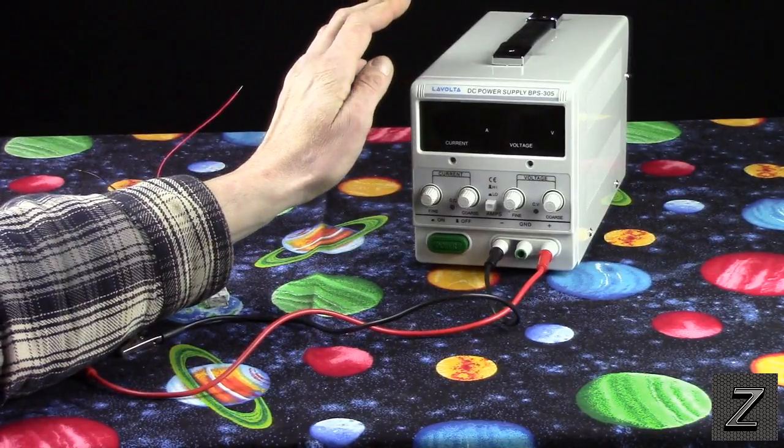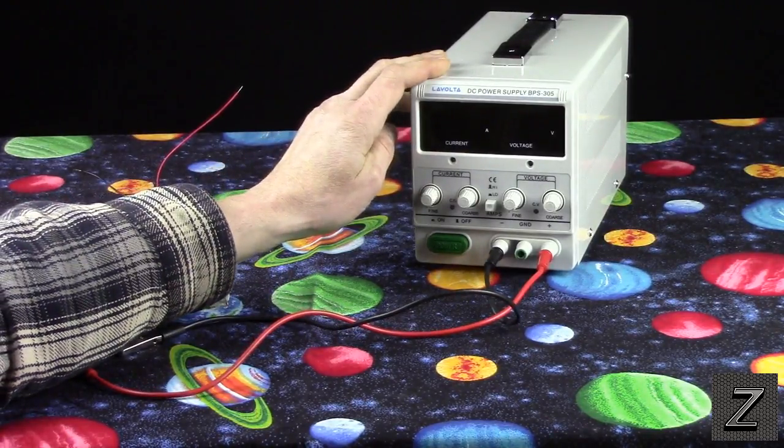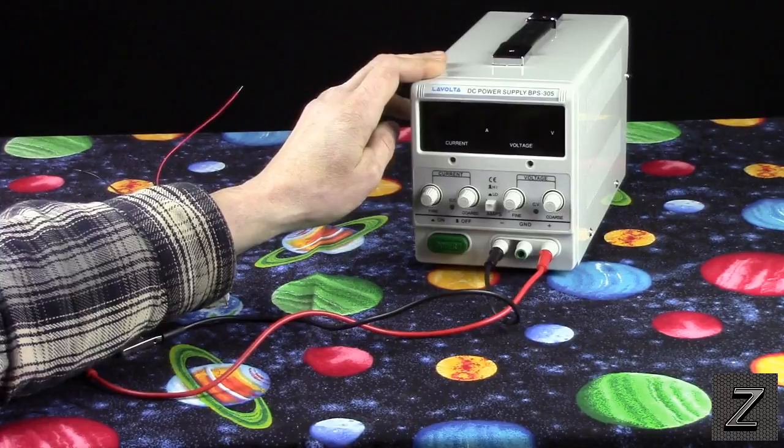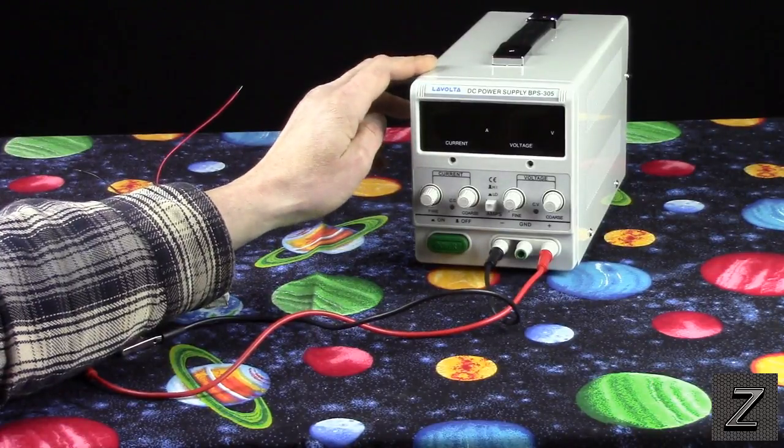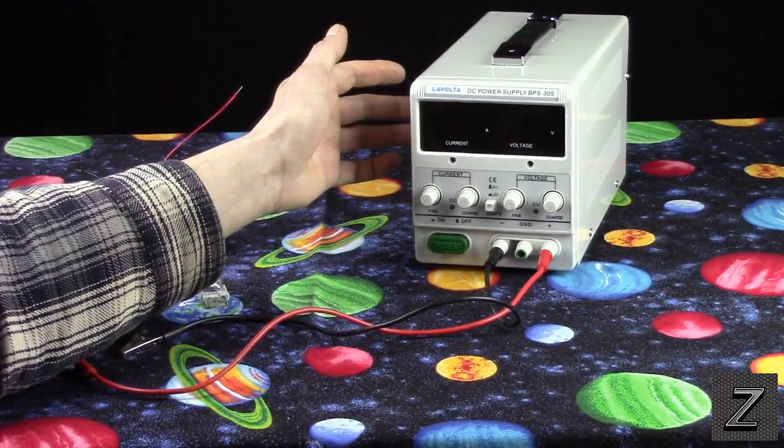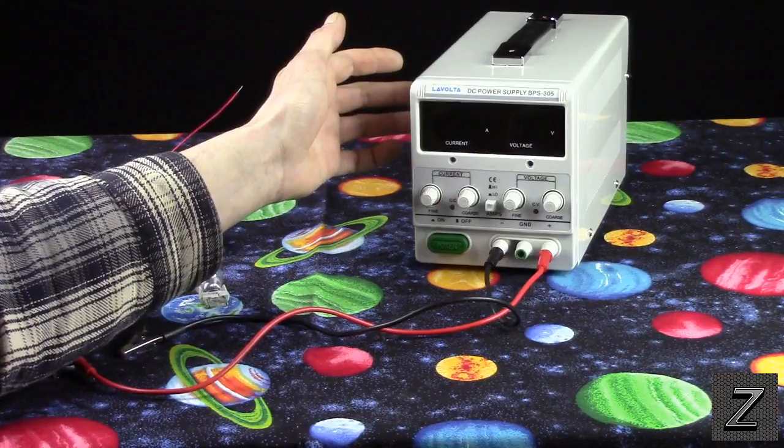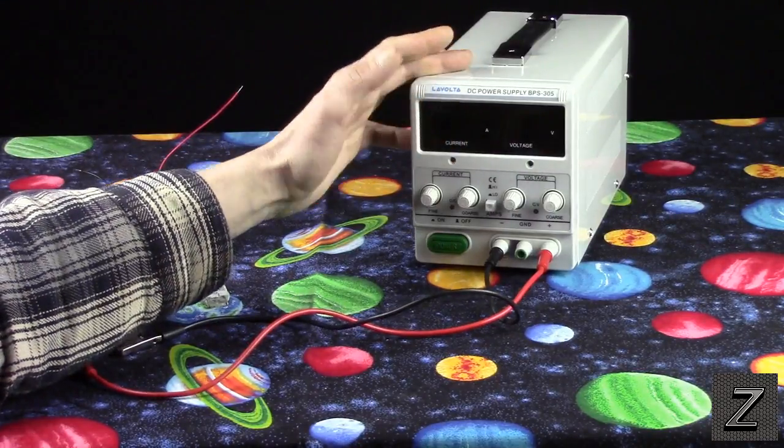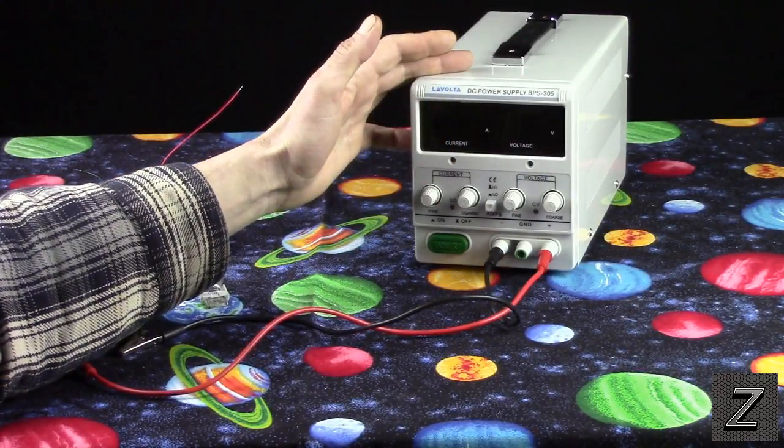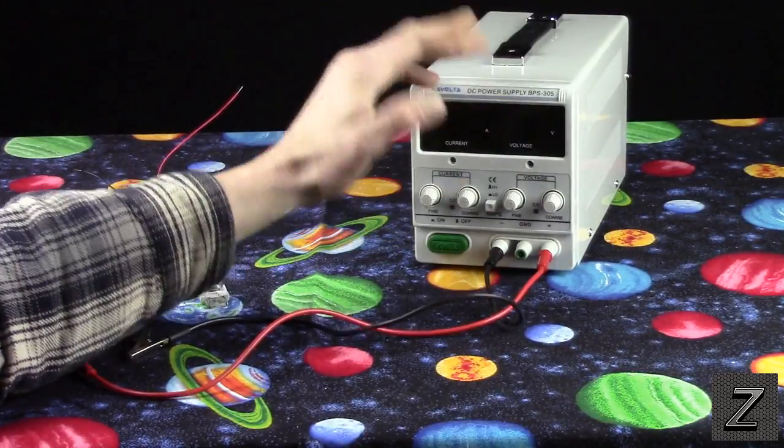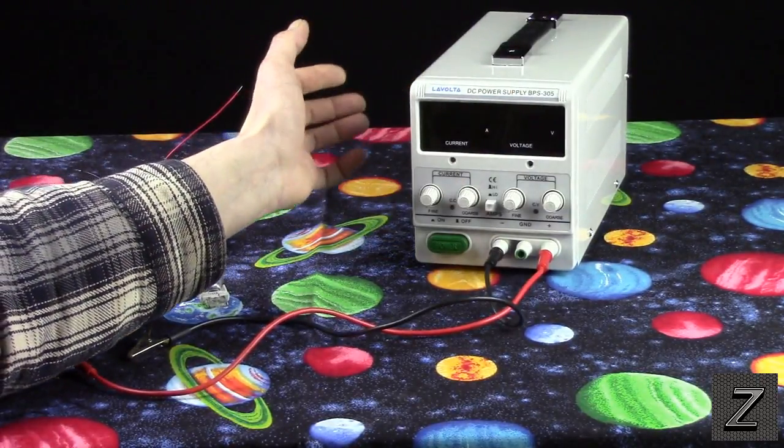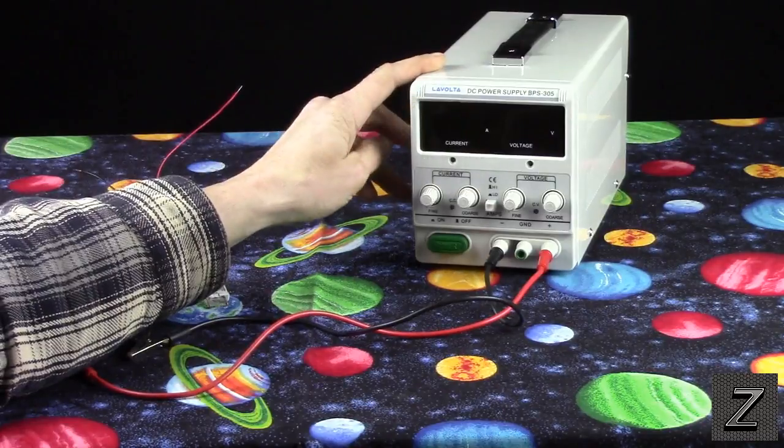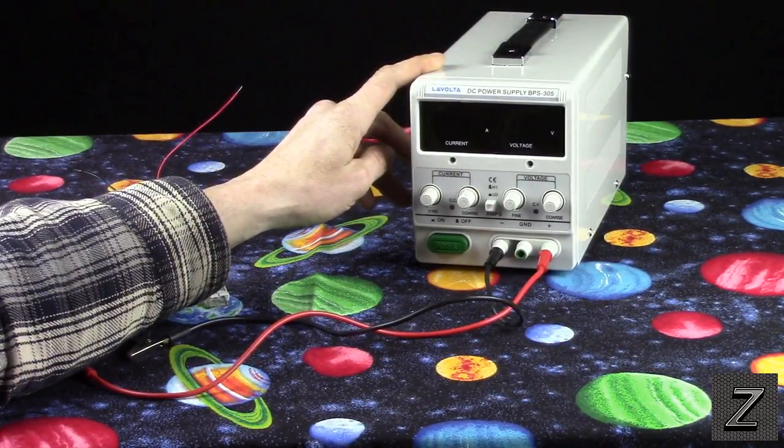Now there are lots of different places in China that make these and this comes from China. And if you're looking at one that's the 5 amp 0 to 30 volt, it's going to probably pretty much be the same thing on the inside. They're just going to have the cosmetic front plate look a little different. Otherwise they're just clones. They all make them, they're pretty much identical.